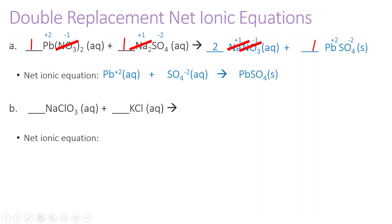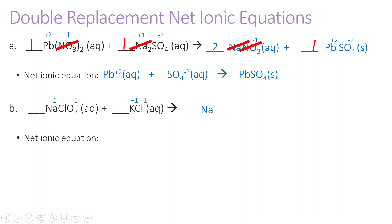Go ahead and pause the video and work on B on your own, then return here when you're ready to check your work. In B, we begin by identifying charges — there are no transition metals. We have sodium, chlorate, potassium, and chloride. Sodium and potassium are both in column one, so they're plus one. Chlorate is a polyatomic ion, ClO3 minus, with a minus one charge. Chloride also has a minus one charge. So we need to swap our cations: sodium and potassium.